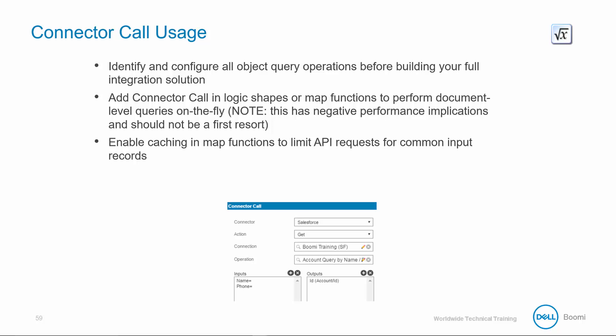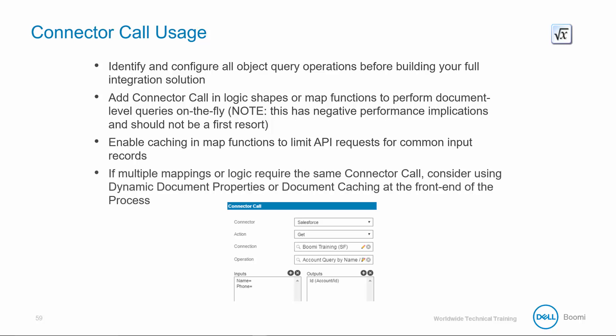Caching the query result means it can be used again instead of making multiple queries for the same information. If multiple mappings or logic require the same connector call, consider using dynamic document properties or document caching at the front end of the process.